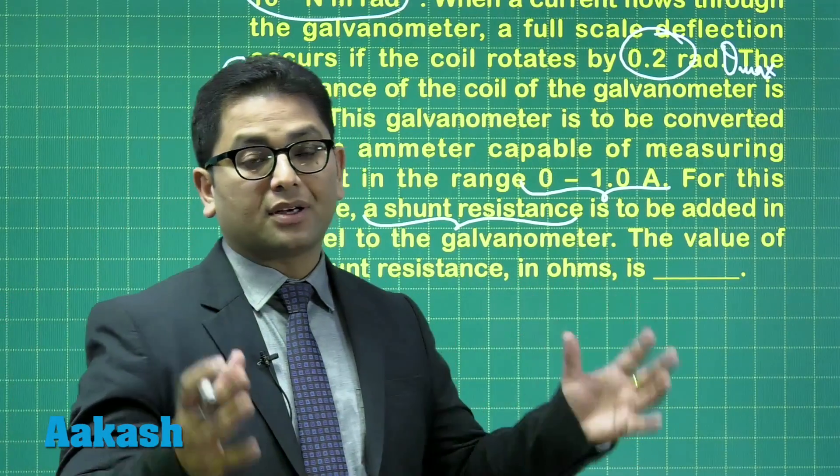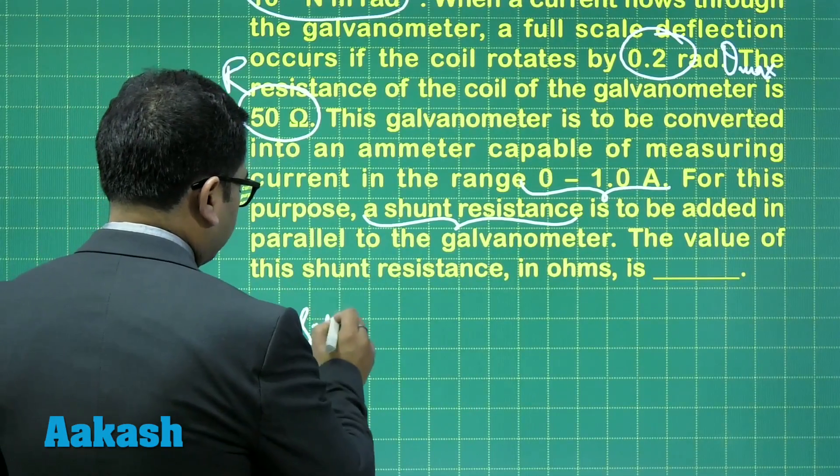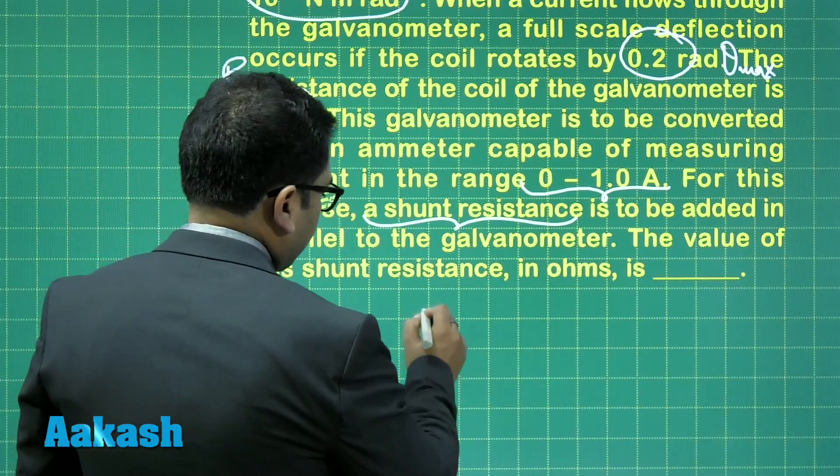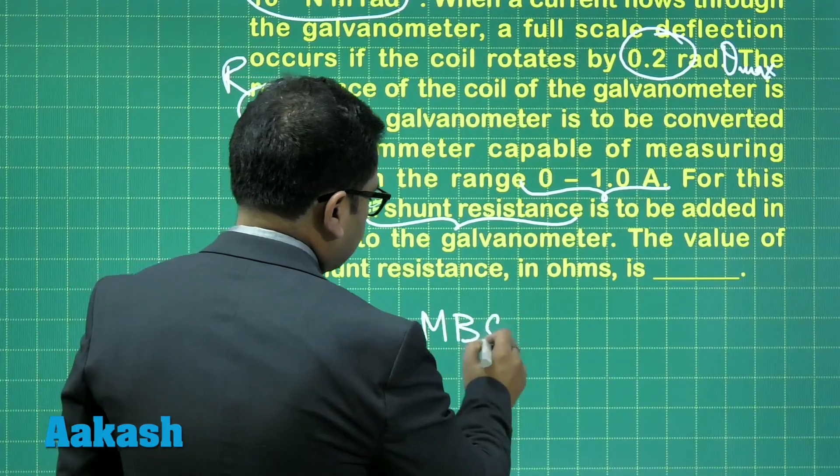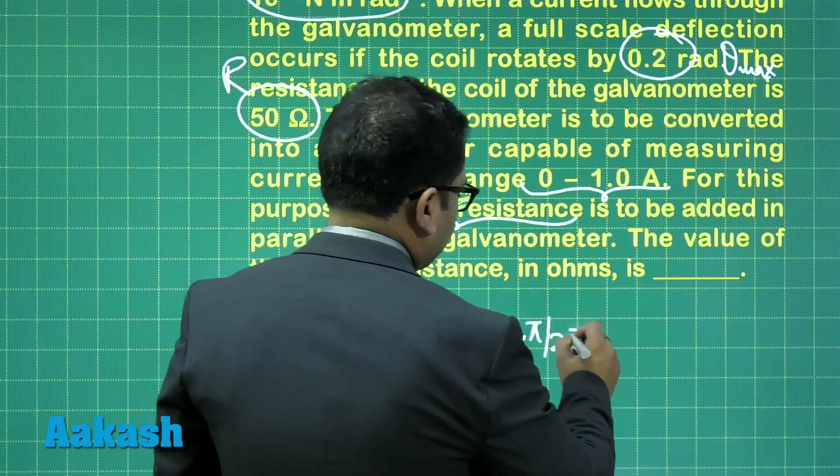The magnetic torque is going to be MB sin 90, that's M cross B, and that torque will be balanced by the spring torque, the regular format.